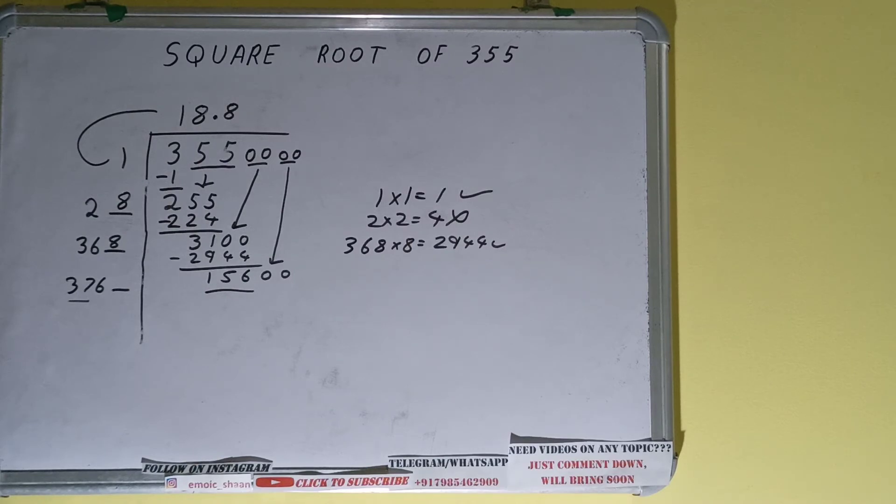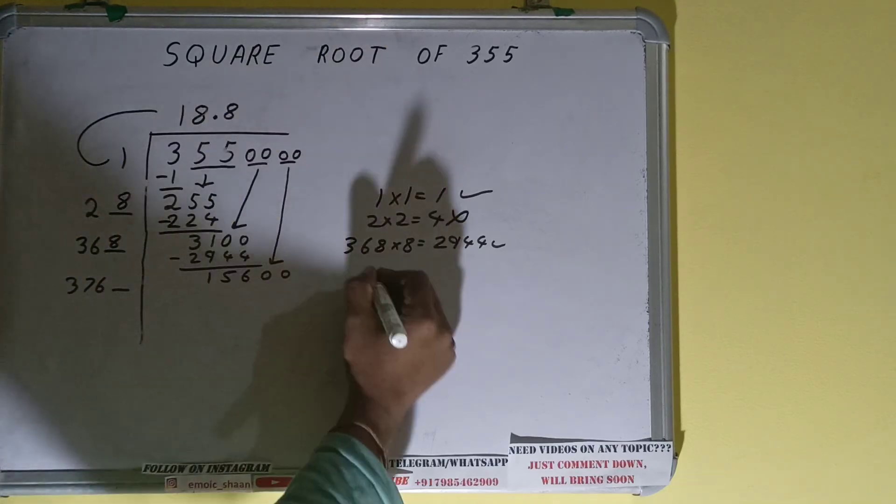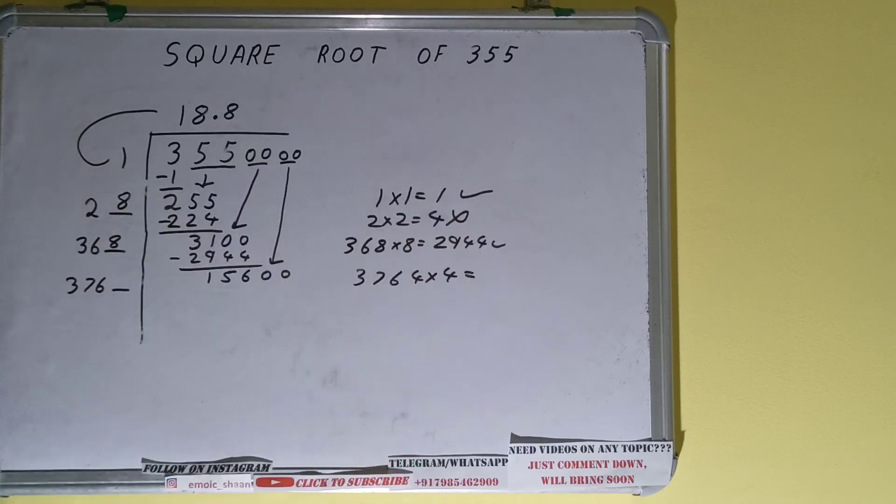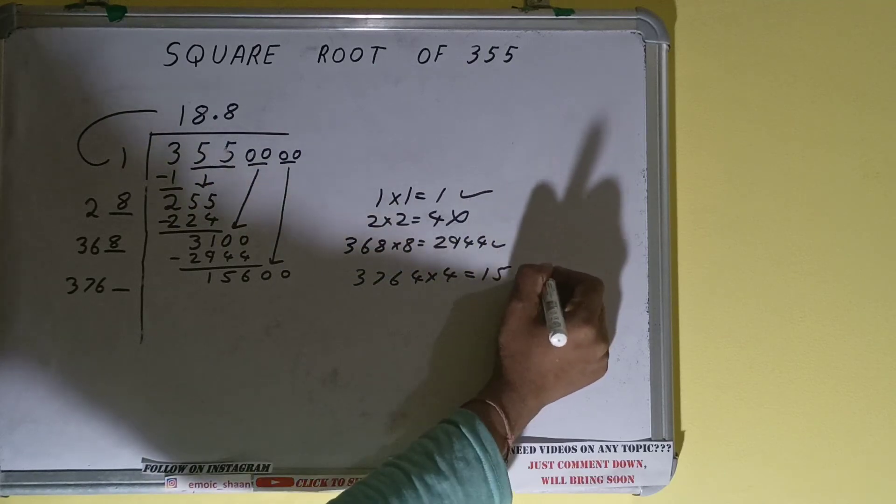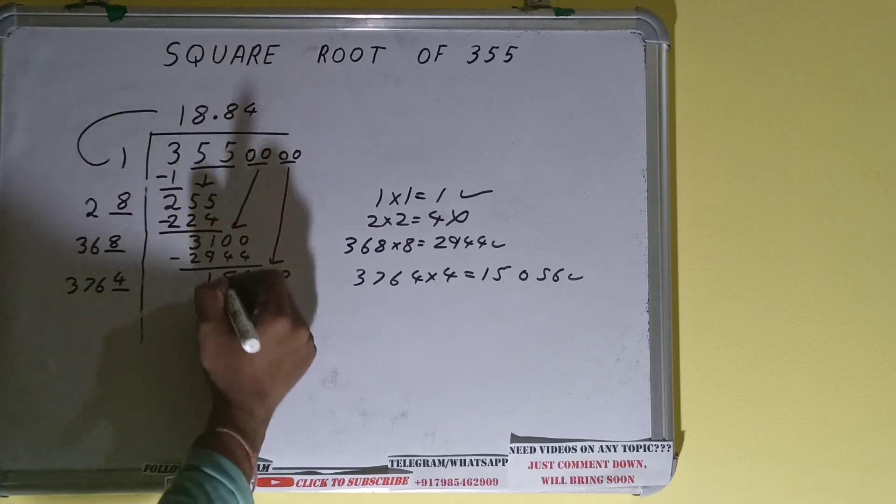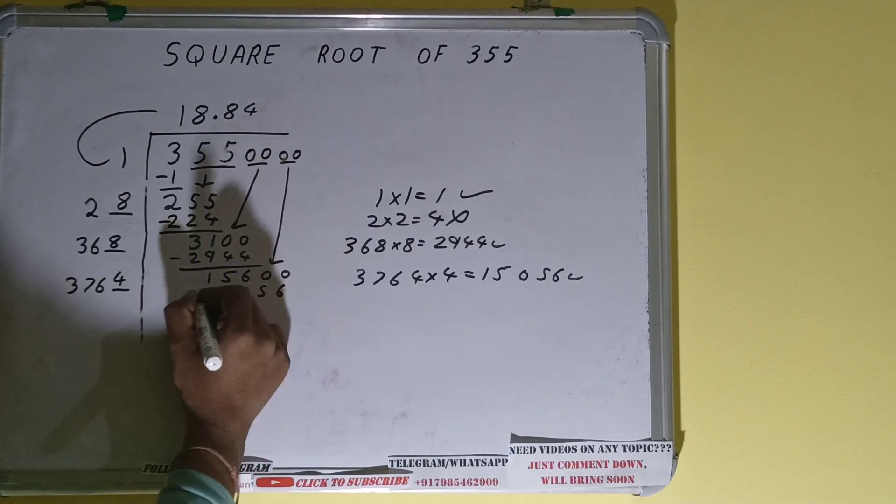So 37 fours is 148, so we can try 4 times. So 3764 into 4 we can try, it will be 15056 which is good to take. So 4 here and 4 here will give 15056, subtract it and we'll be having 544.